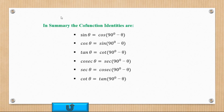In summary, these are our six co-function identities that we've derived, and these are what we're going to be making use of.